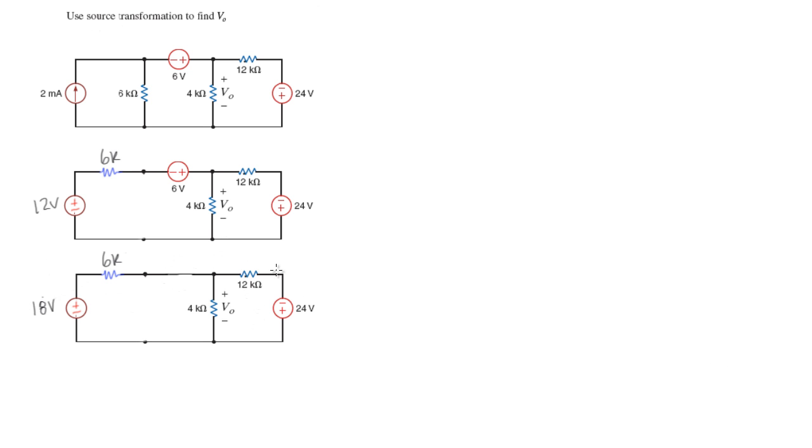And the next step would be to do another source transformation. And the reason is because I want to combine this resistor and this resistor. And right now we can't do that because we have this node in the center of them.